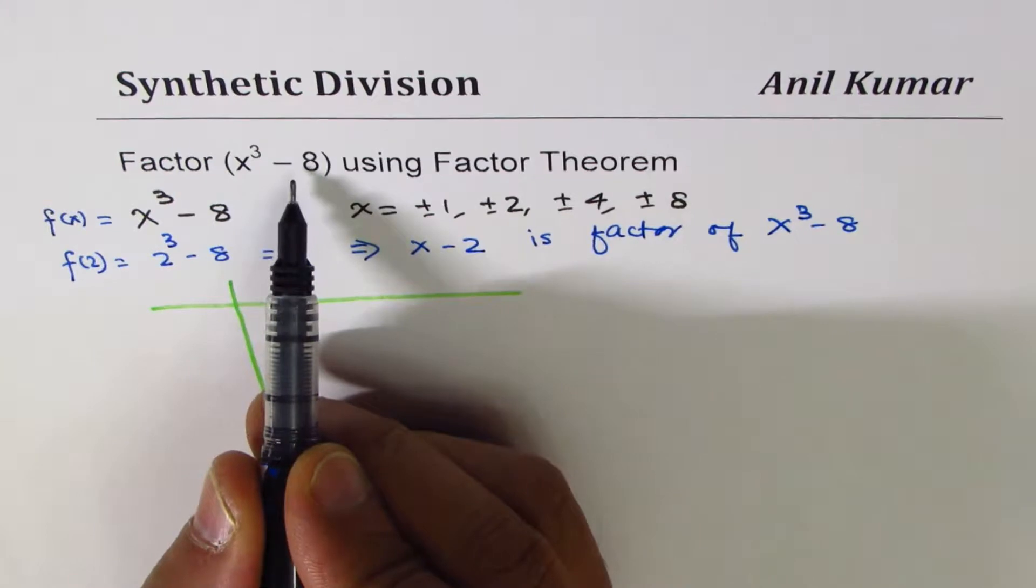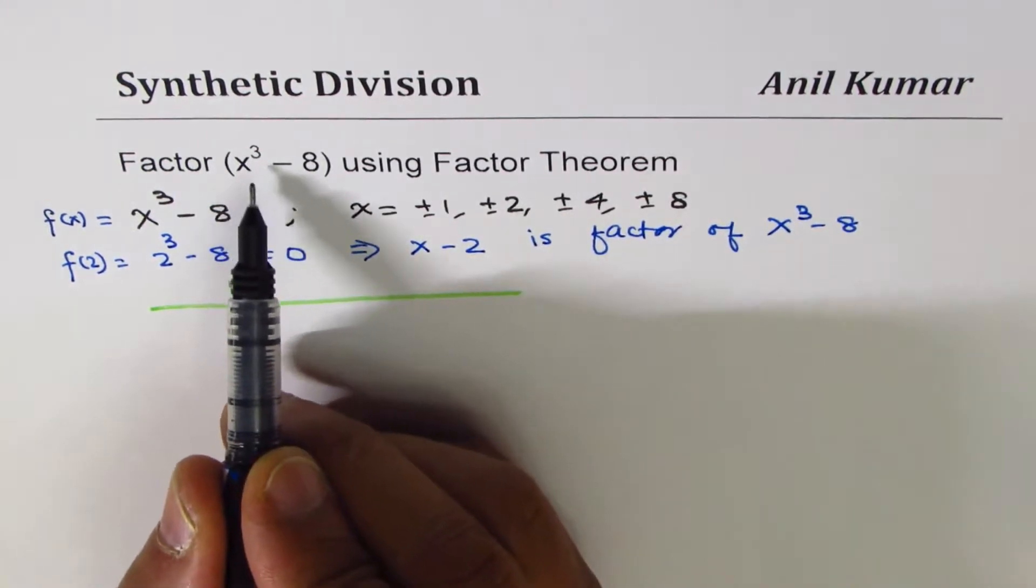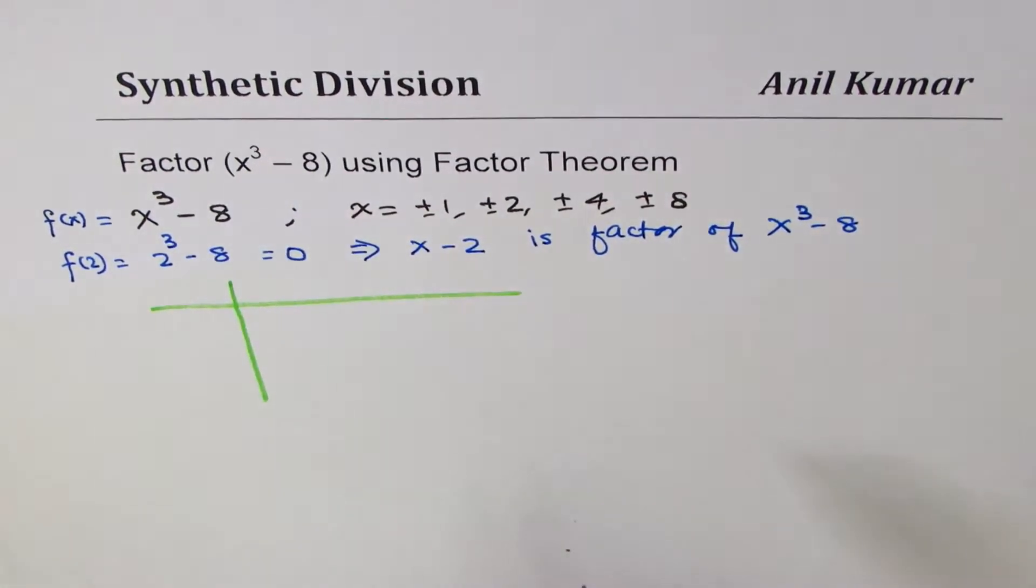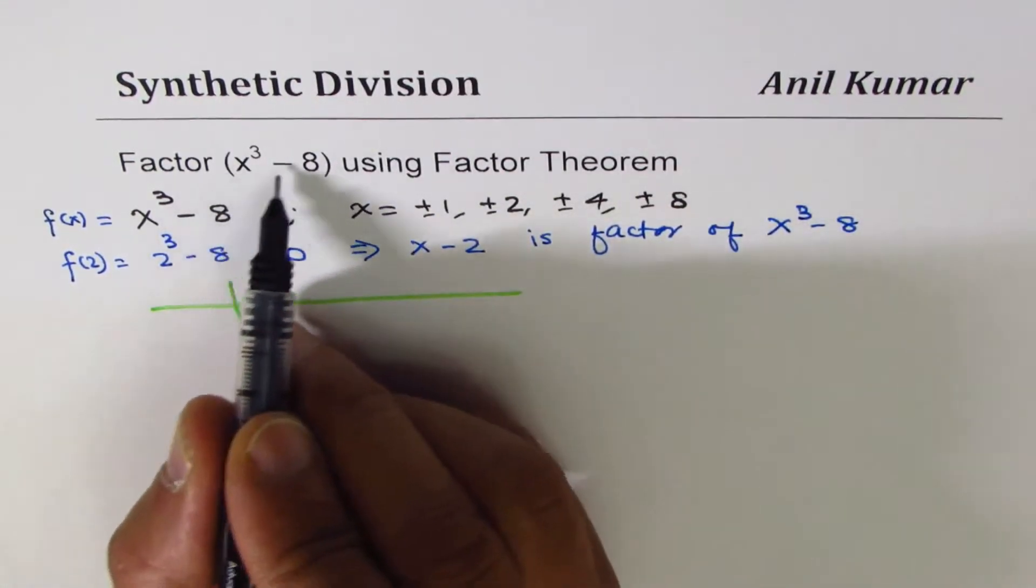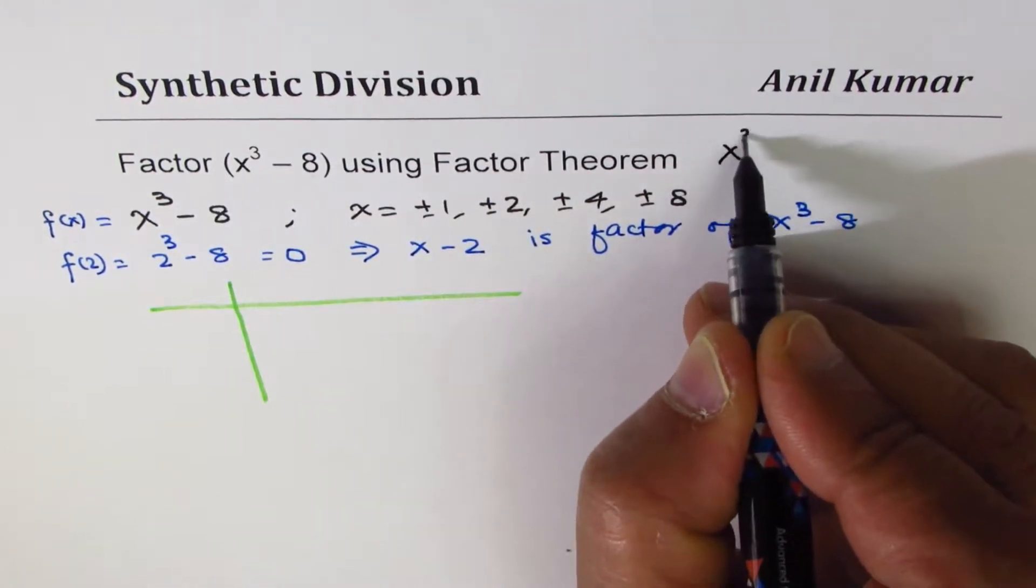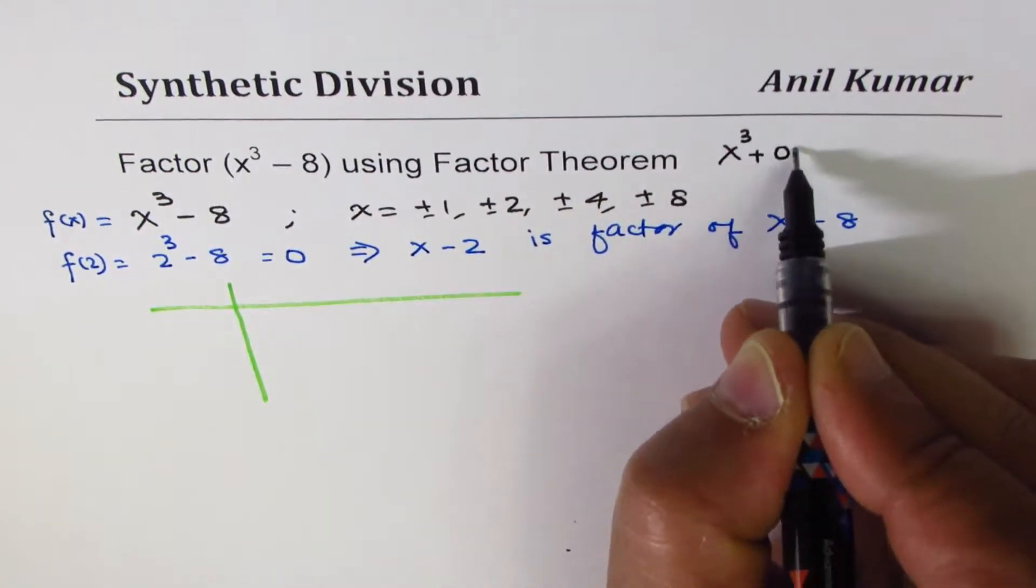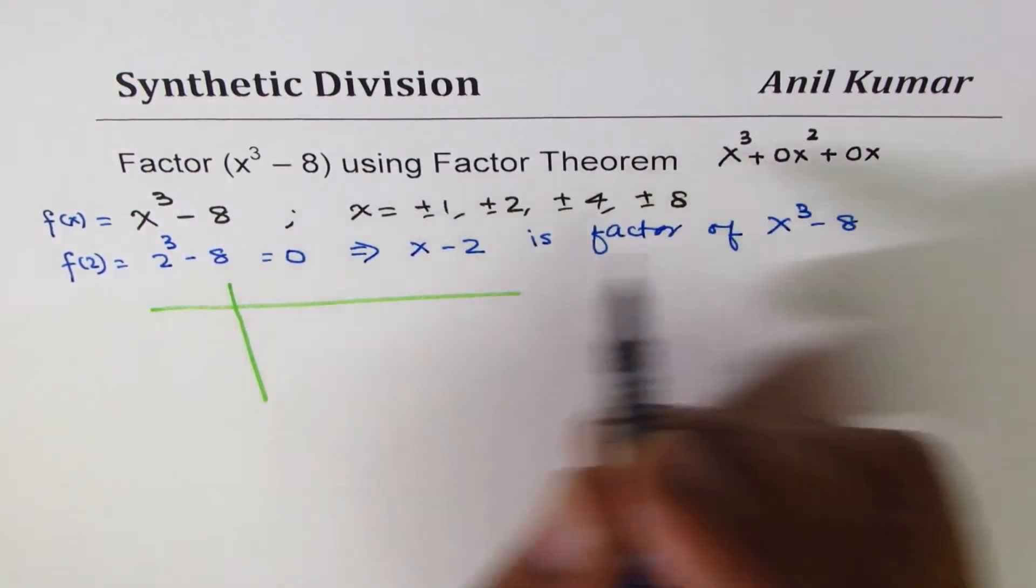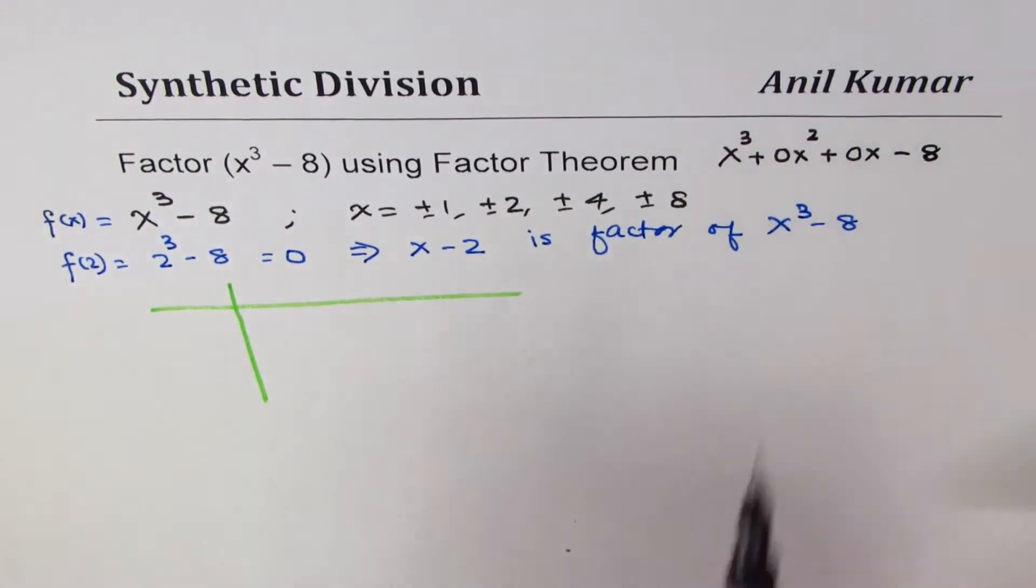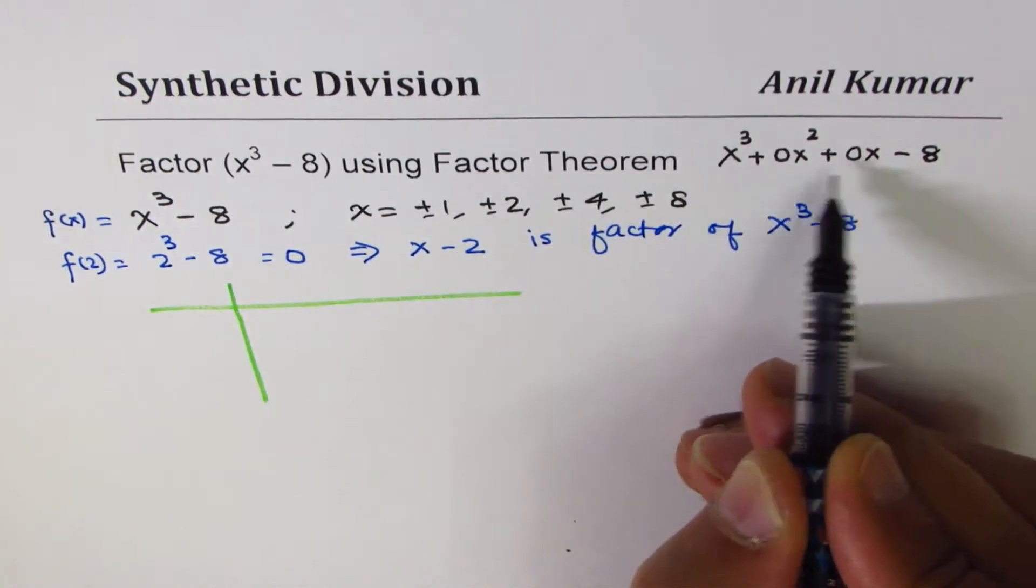In our case, there are a few terms which are missing. The x square term is missing and the x term is missing, right? So what we do is we put placeholders for them. So you can think of this equation as x cube plus 0x square plus 0x minus 8. So these 0s here are the placeholders.